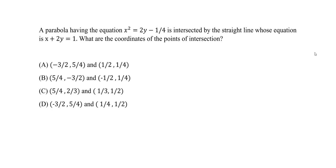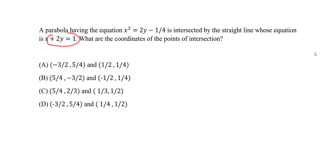I want to run quickly through an intersection question where we want to find the coordinates of the points of intersection. What we're given is a parabola having an equation of x squared equals 2y minus one-fourth, intersected by a straight line whose equation is x plus 2y equals 1. We have a linear equation that's a straight line, and we want to find the coordinates of the points of intersection.